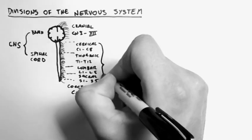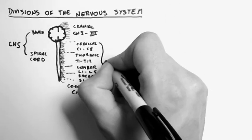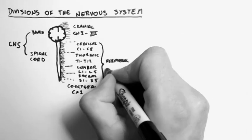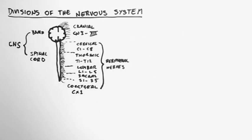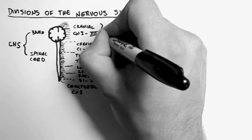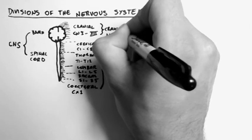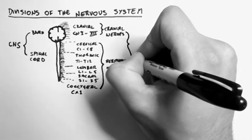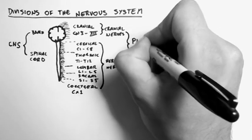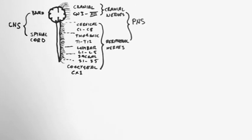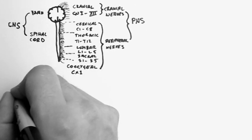Now these nerves here are known as the peripheral nerves. And these nerves are called the cranial nerves. Together, they make up the peripheral nervous system. So these are the nerves that lie outside of the CNS.